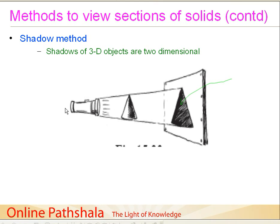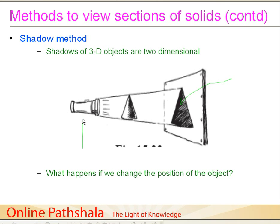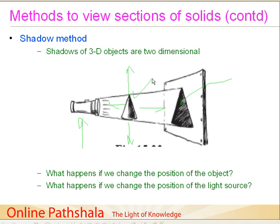You can do some interesting experiments here. First, what happens if you change the position of the object while keeping the light source steady? You can move the object forwards, backwards, upwards, or downwards. Alternatively, you can keep the object steady and change the position of the light source — move it upward, downward, forward, or backward. It would be really interesting to see what impact these variations have on the shadow.